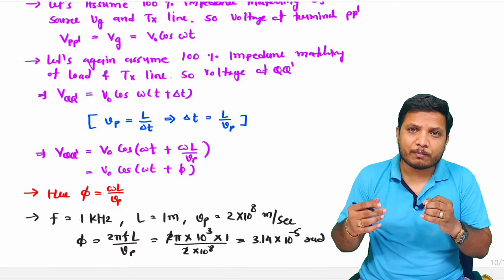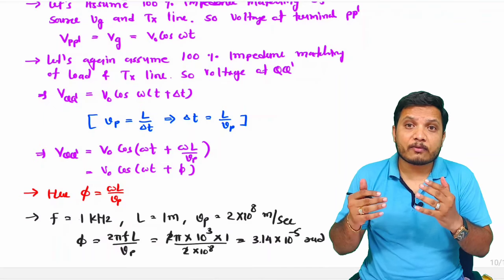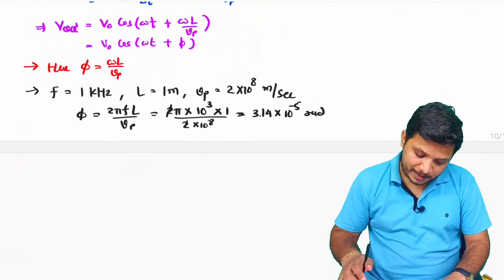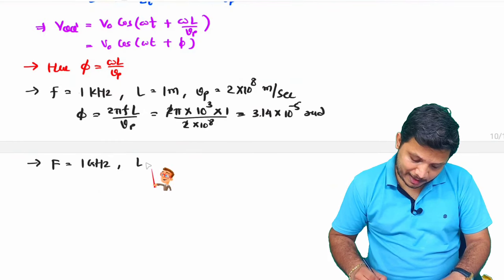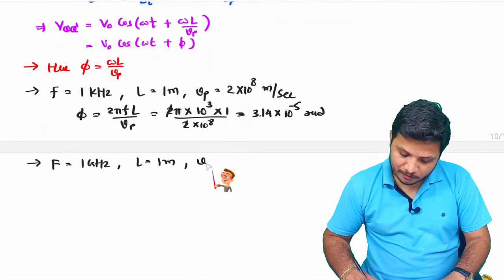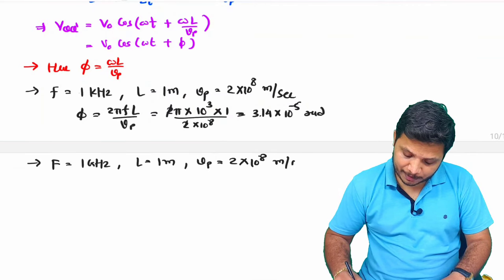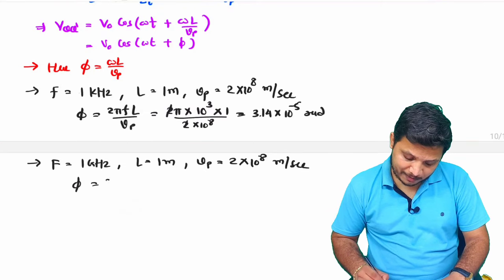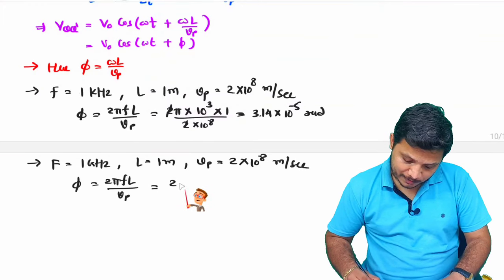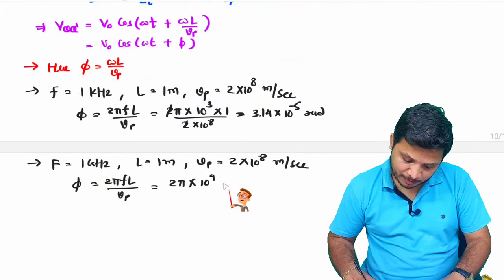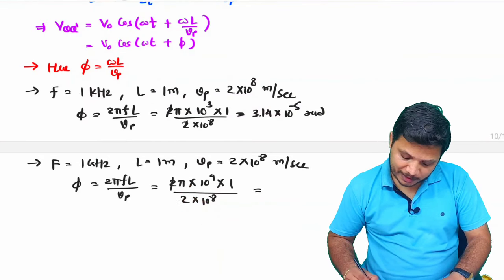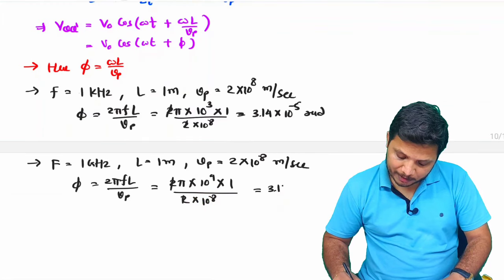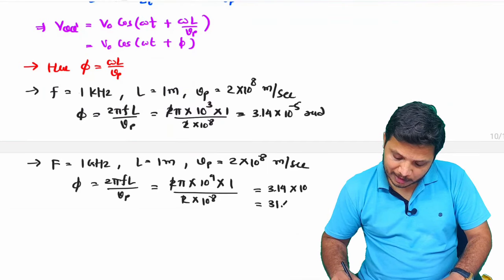Now consider a microwave frequency example. Case 2: frequency f = 1 GHz = 10⁹ Hz, length L = 1 meter, phase velocity Vp = 2×10⁸ m/s. The phase phi = 2πfL / Vp = 2π × 10⁹ × 1 / (2×10⁸). The 2 cancels, giving pi × 10⁹ / 10⁸ = 3.14 × 10 = 31.4 radians.